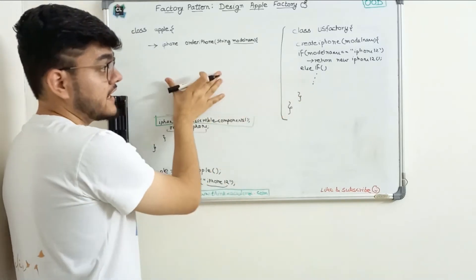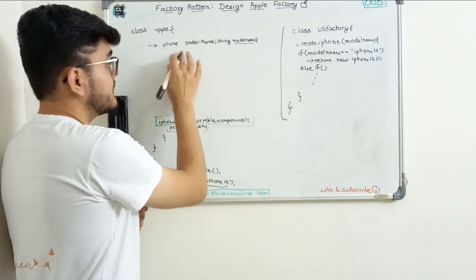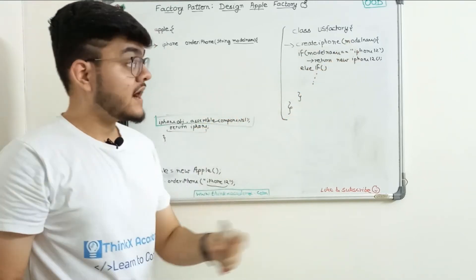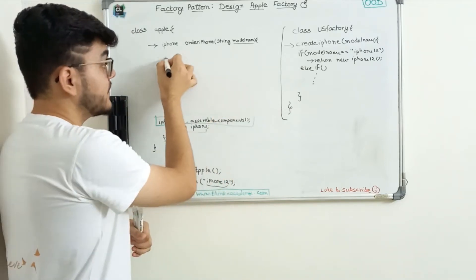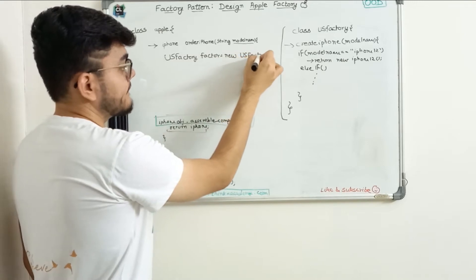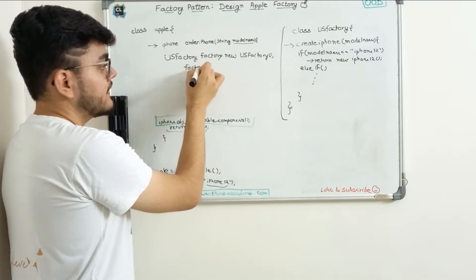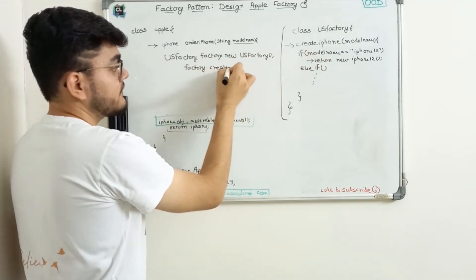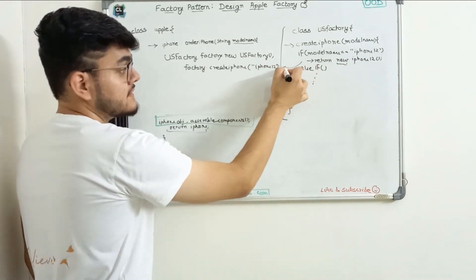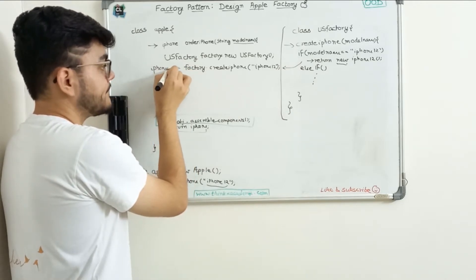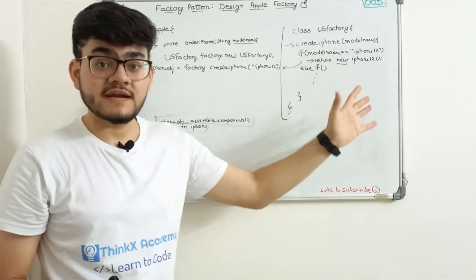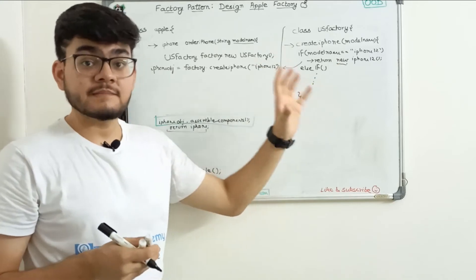Now, to call the createIPhone function, I need to create an object of USFactory: factory equals new USFactory. Then I can call factory.createIPhone and pass iPhone12 — this gives me the whole iPhone12 object, which I store in iPhoneObj. Using iPhoneObj, I can assemble the components of iPhone 12. What we've essentially done is moved the changing code from the Apple class into a separate factory class, which is responsible for creating and supplying objects.